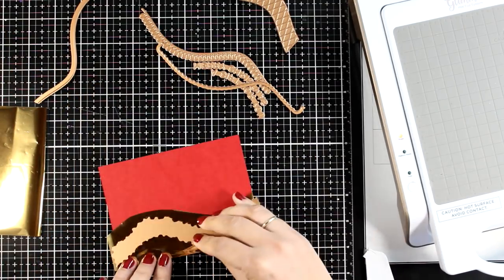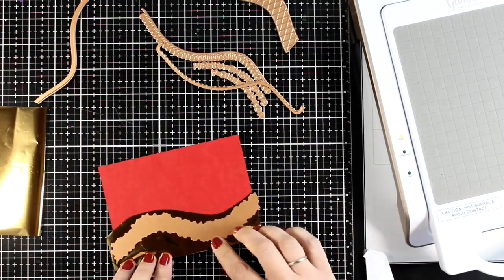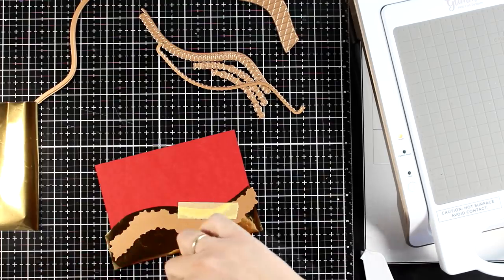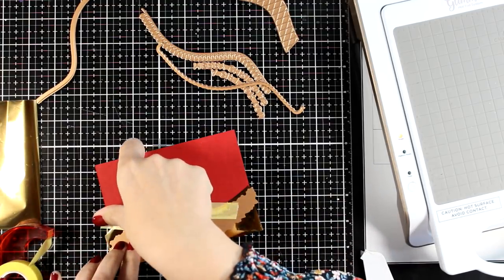I'm working on a red cardstock here that's four and a quarter by five and a half. I'm placing the plate on top of the foiling and securing everything down with some washi tape just to make sure that nothing is going to move.